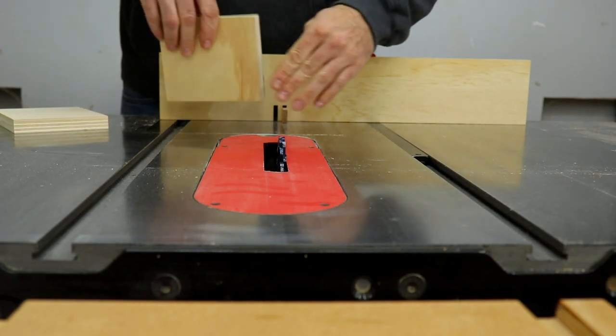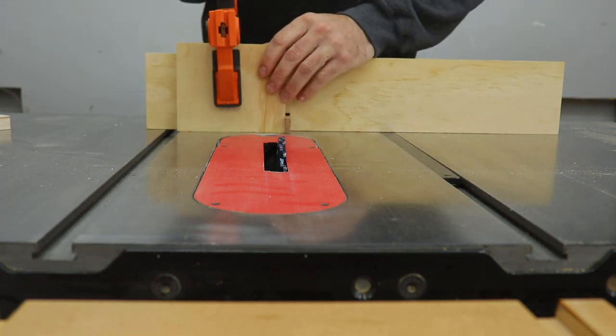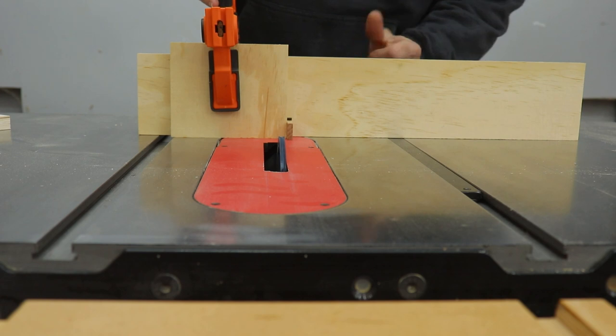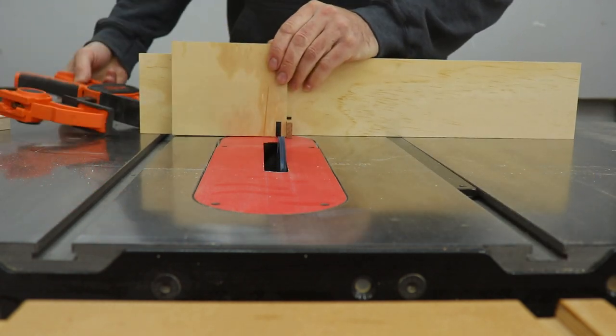I always put tape on the backside of the piece to prevent tear out. For the first cut, the piece should butt up against the pin and then slide the piece over the pin to make the other cuts and repeat that until you get to the end of the piece.